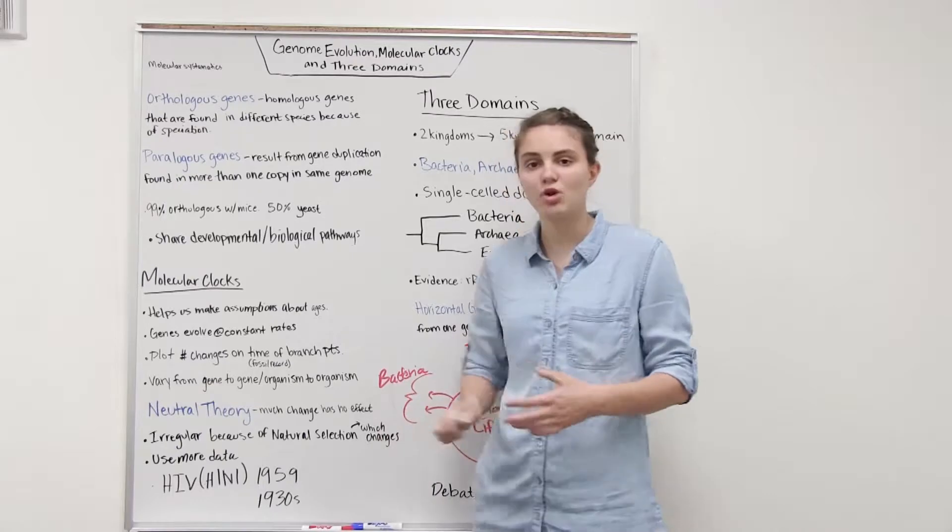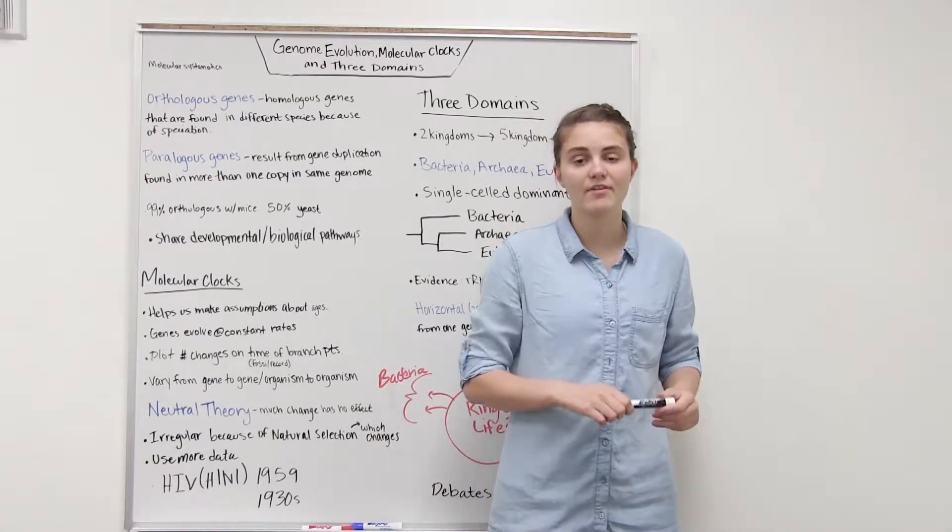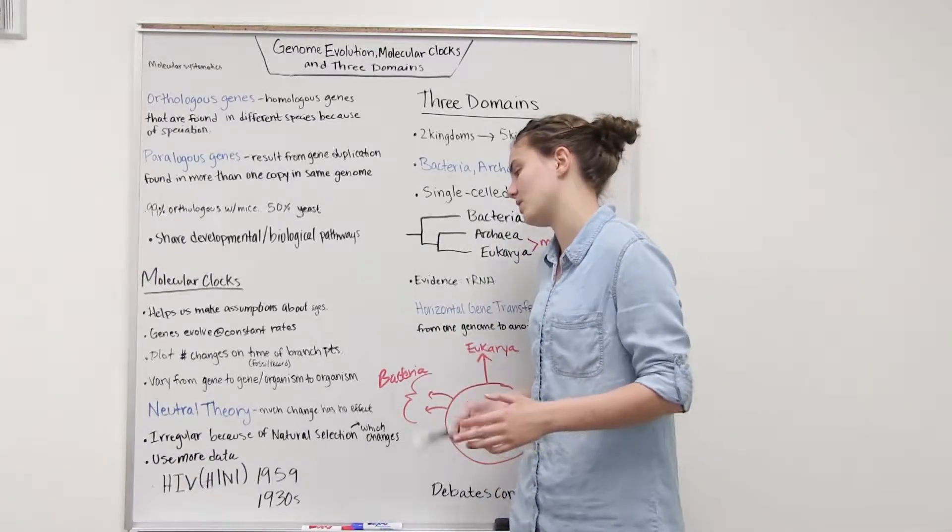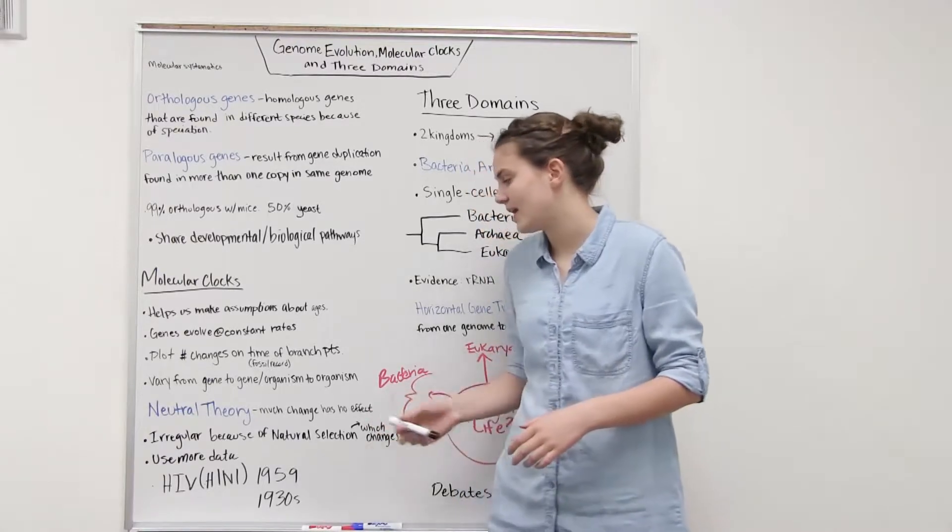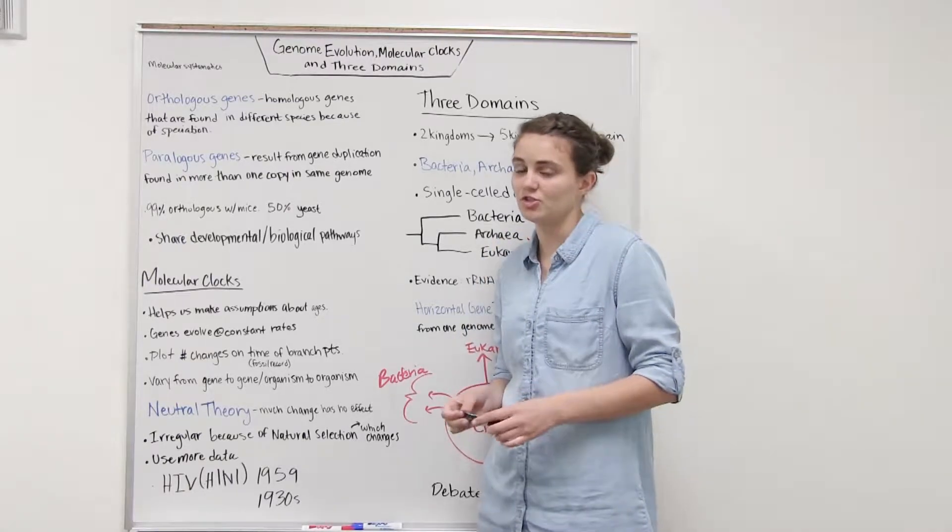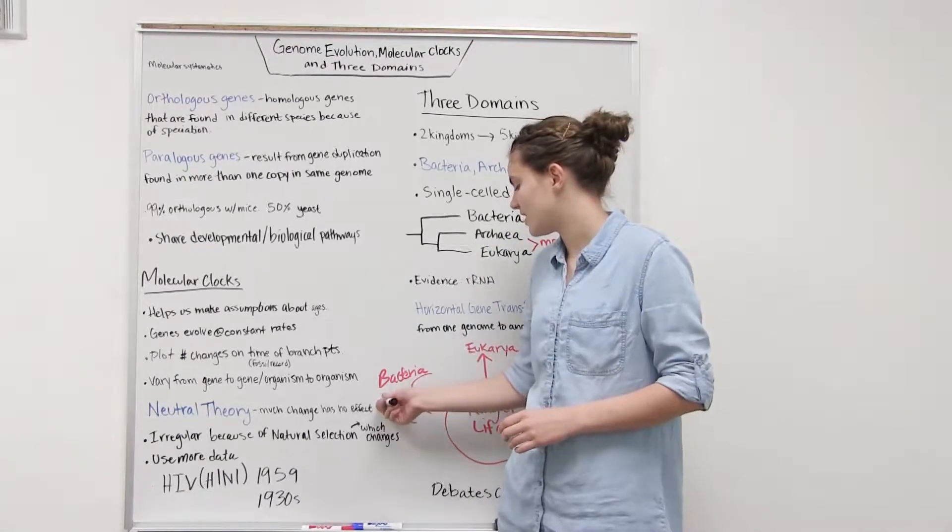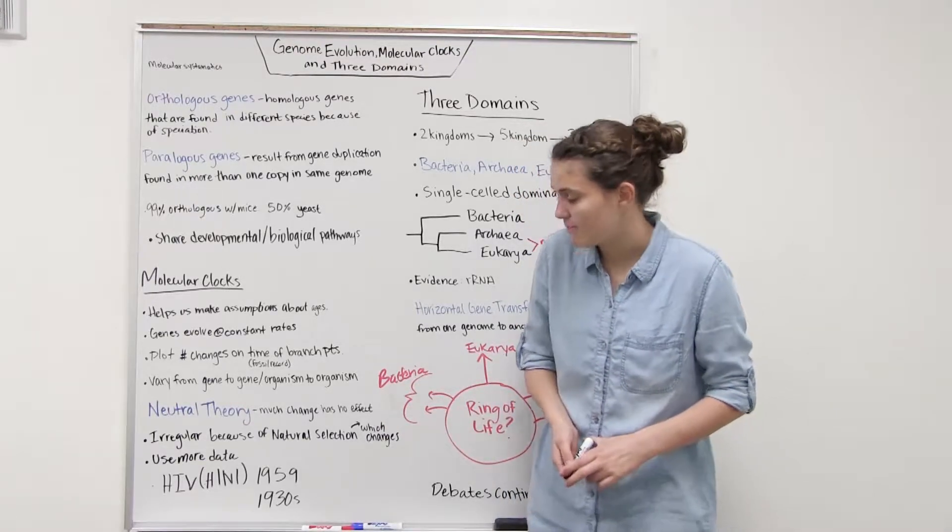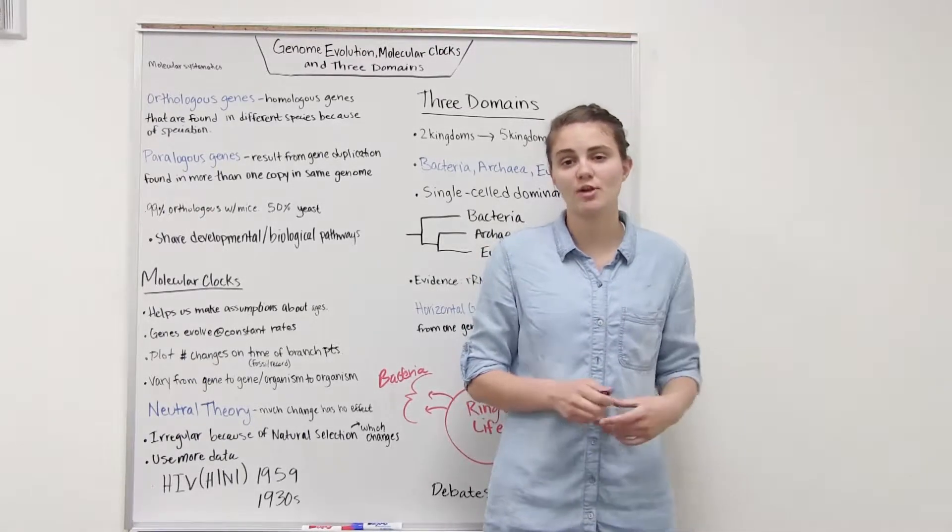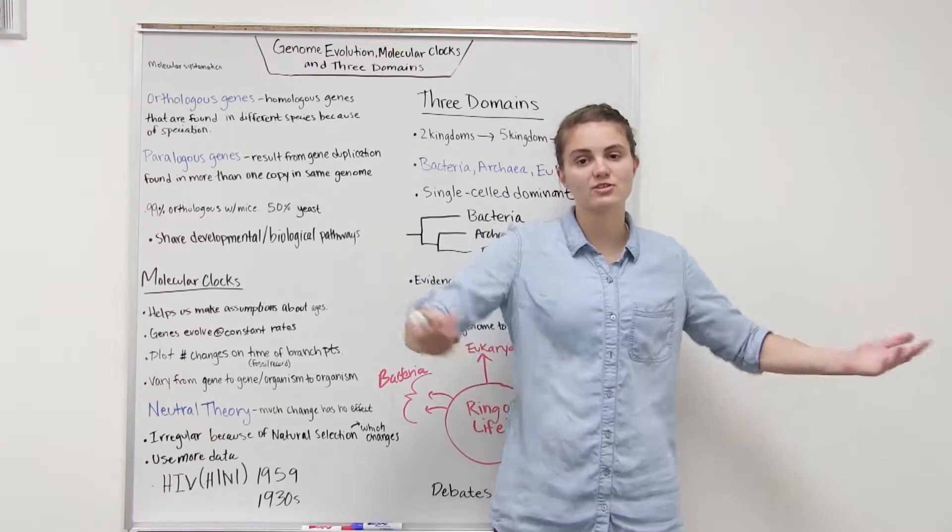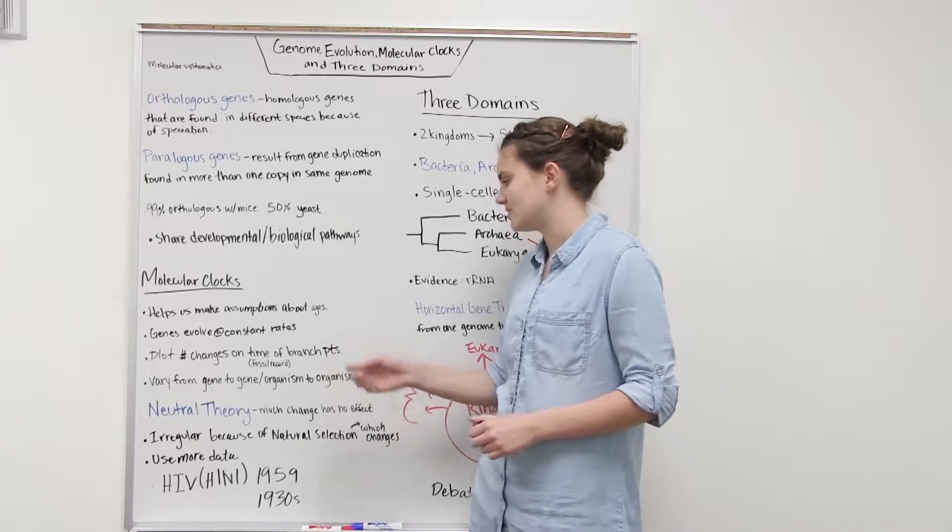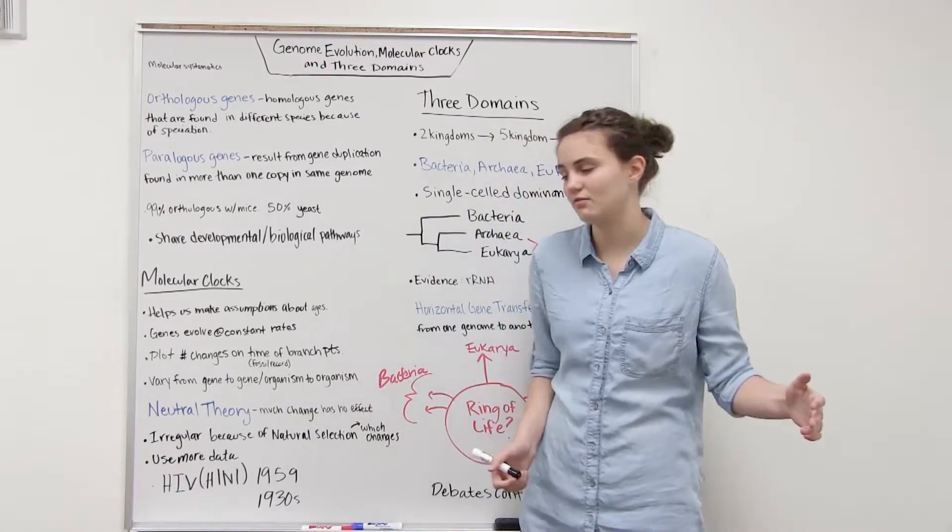But it can have some problems, first off because we can have varying times it takes for genes to evolve from gene to gene or from organism to organism. Also we have natural selection acting on these genes so it might be more advantageous for certain genes to change than others. There's this idea of the neutral theory that much of the change that happens to a gene has no effect on natural selection because a lot of the genetic changes aren't beneficial or detrimental to the organism, so natural selection is not going to act on it. That kind of influences this because that means that a lot of our gene changes aren't actually influential.